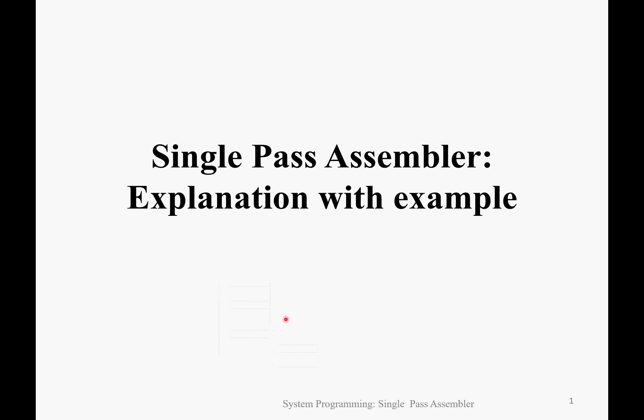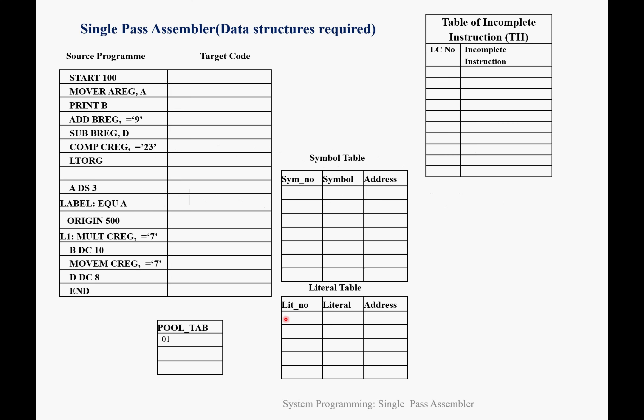Good morning. Today we are going to see single-pass assembler explanation with example in system programming. In a single-pass assembler, different data structures are required: symbol table, literal table, and table of incomplete instructions. In a single-pass assembler, we are not going to generate any intermediate code — direct target code generation is used. The table of incomplete instructions is required to store unavailable information of different symbols or literals.